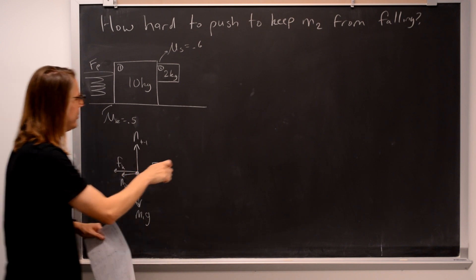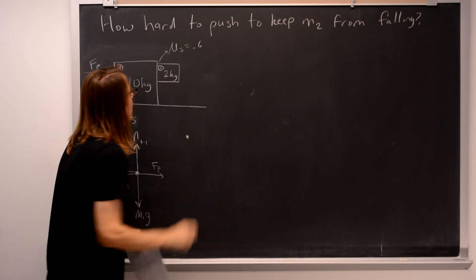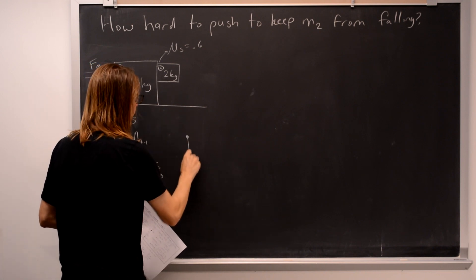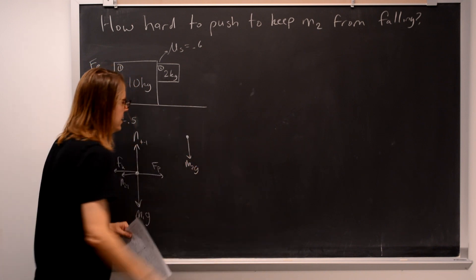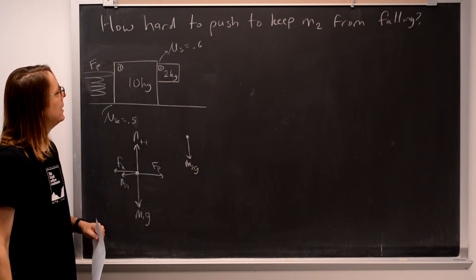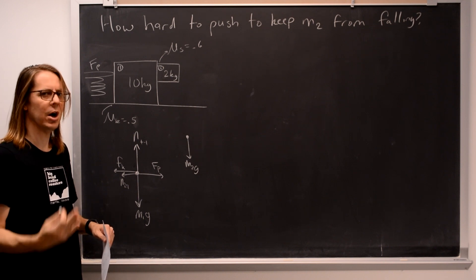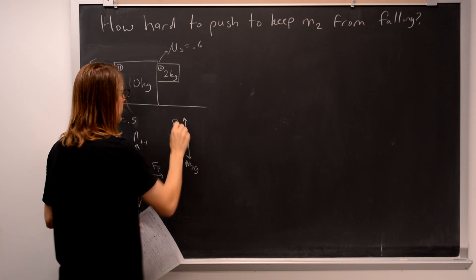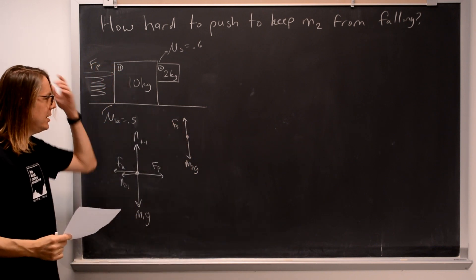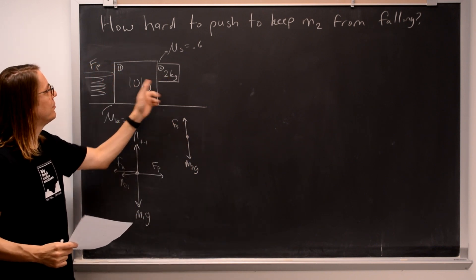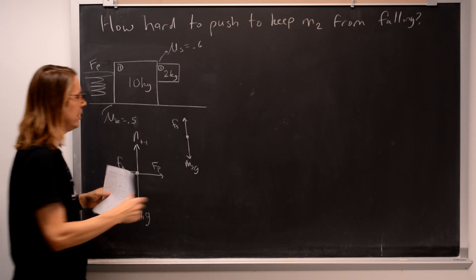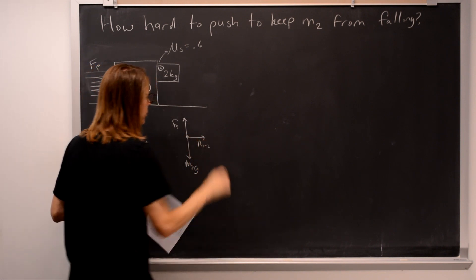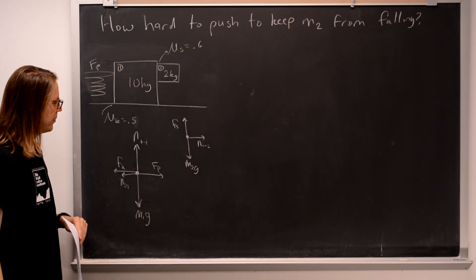So that's for the 10-kilogram mass. Now let's draw a free-body diagram for the 2-kilogram mass. I'll do the easy one first. There's M2g. And pushing up, we said we're hoping there's going to be a static friction force. Pushing up, maybe. And then the only thing pushing forward is the normal force of 10 kilograms. So normal of 1 to 2, like that.